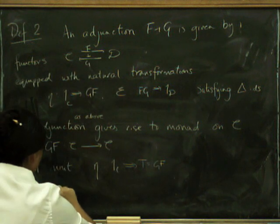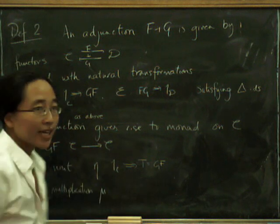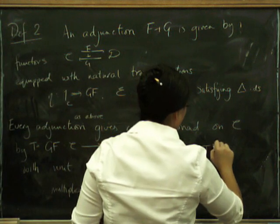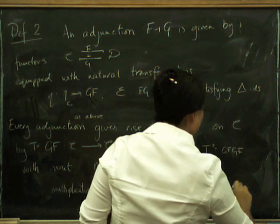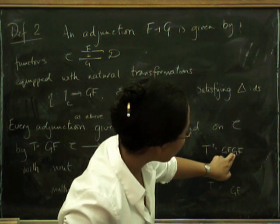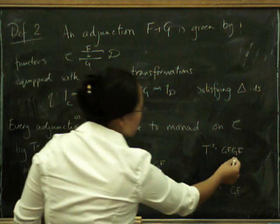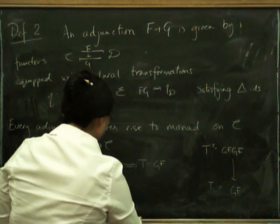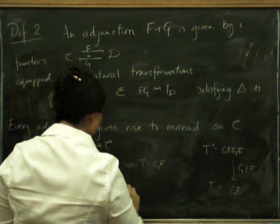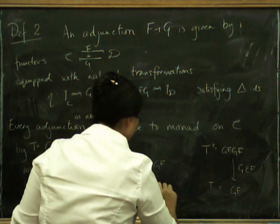What about the multiplication? It has to go from T squared to T. T squared is GFGF, and T is GF. So what we have to do is remove the FG from the middle. We've got a way of removing FG because that's what epsilon is. So we're going to remove this FG from the middle using G epsilon F. So mu equals the natural transformation G epsilon F. It goes from the right place to the right place — from T squared to T.